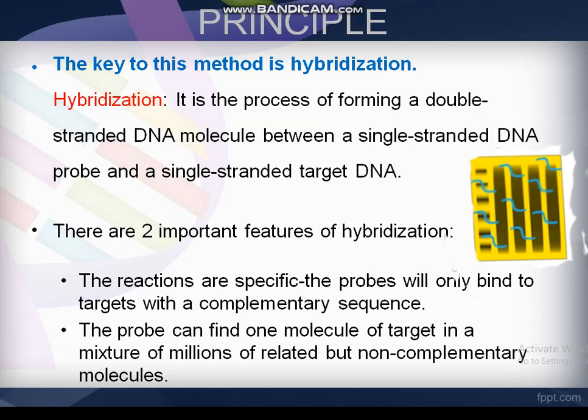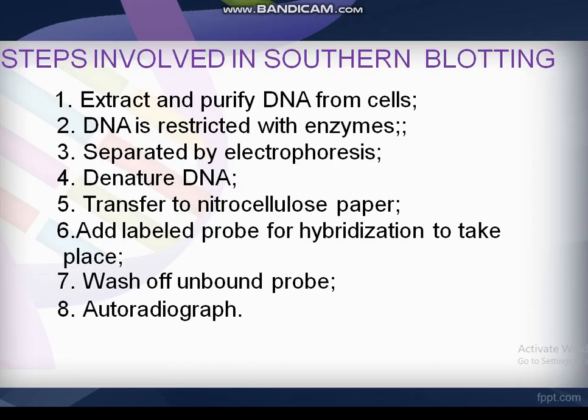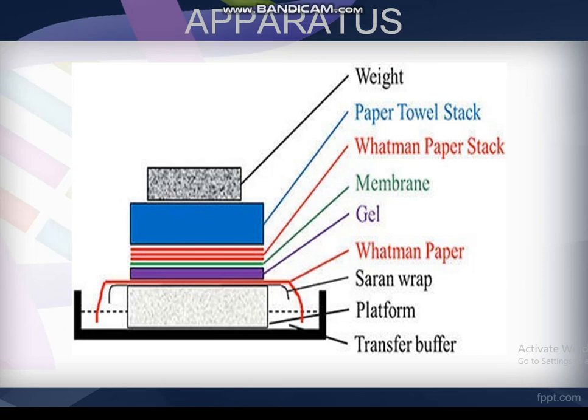The steps involved in southern blotting: first, extract and purify DNA from the cells; then DNA is digested with restriction enzymes; after that, separation by electrophoresis; then denaturation of DNA; next step is transfer to nitrocellulose paper; after that, add labeled probe for hybridization to take place; then wash off unbound probe; and the last step is autoradiography.